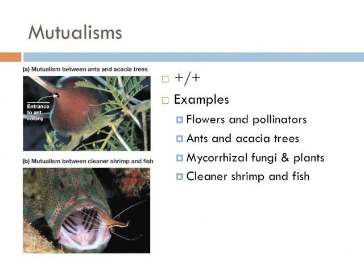Mutualisms are symbiotic relationships between species. Mycorrhizal fungi exist in a mutualistic relationship with over 90 percent of all the plant species ever studied — fungi provide increased water-absorbing ability while the plants provide the fungi sugar. Flowering plants have also developed a mutualistic relationship with their pollinators: the flowers get pollinated while the pollinators get food. Lichens are a mutualistic relationship between fungi and algae, with algae providing the sugars and fungi providing a home.